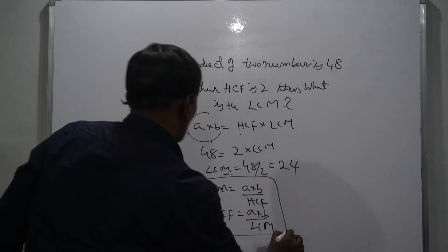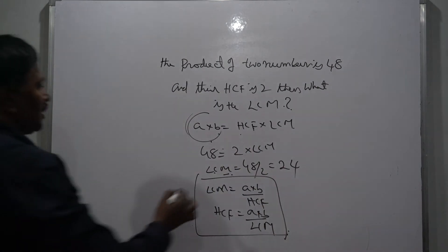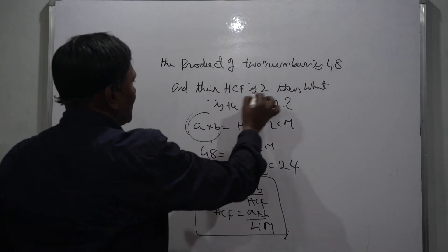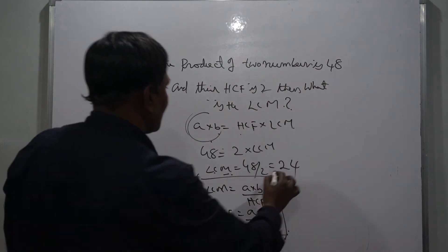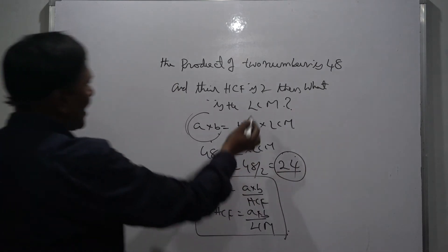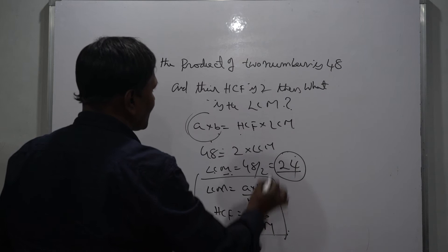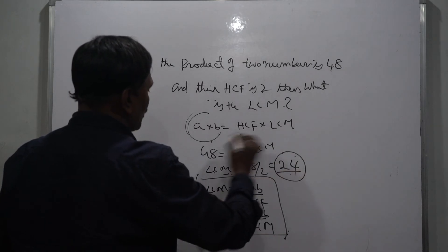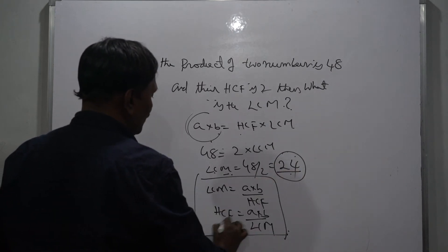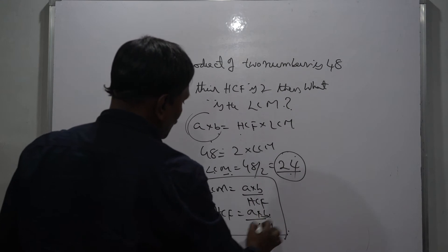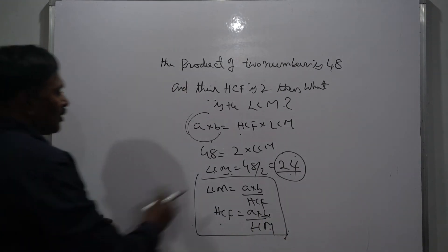So if the product of the two numbers is 48 and the HCF is 2, then the LCM is 24. If you know the LCM, you can find the product of two numbers, and if you know the LCM you can find the HCF with the help of this formula a into b by LCM. Next we will see one more problem.